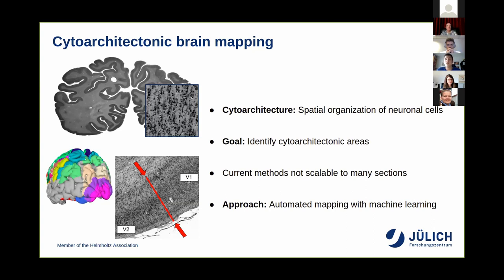Currently, these areas are identified using a semi-automatic method, which is mostly based on statistics and image processing. It works by identifying borders between areas — for example, the border between the primary and the secondary visual cortex. The issue with this method is that it's not scalable to very large numbers of sections. Thinking about the BigBrain, it's not possible to map all 7,400 sections using this method, and this problem becomes even more prominent with the large amounts of data we can acquire with today's hardware. This is where we come in, working on approaches to automate the mapping using machine learning.